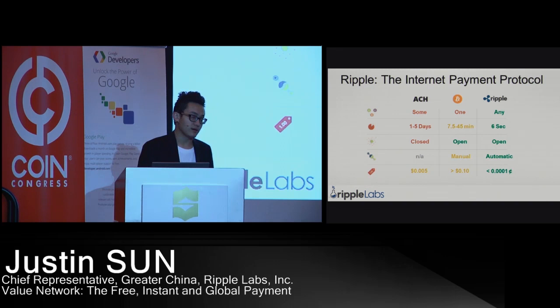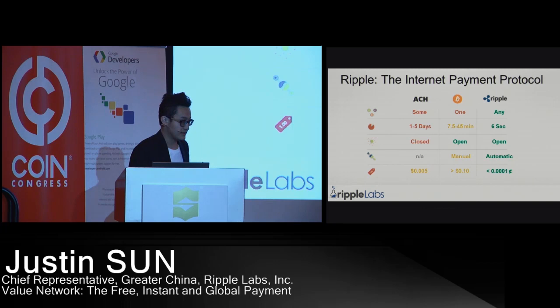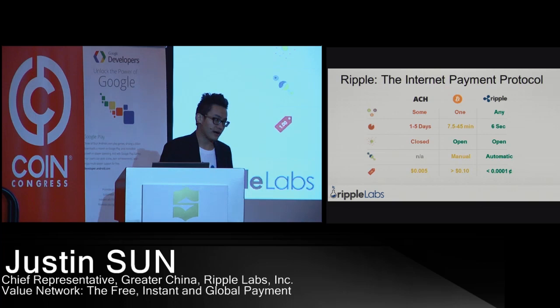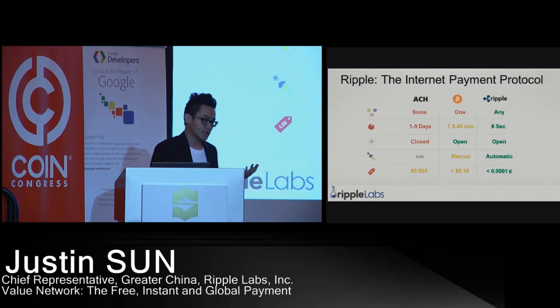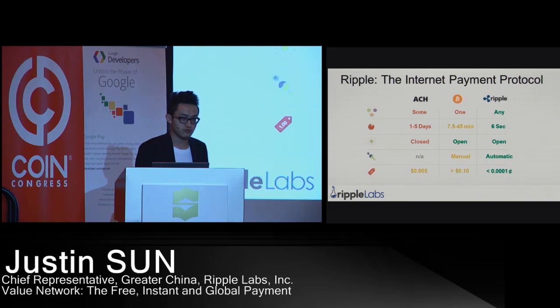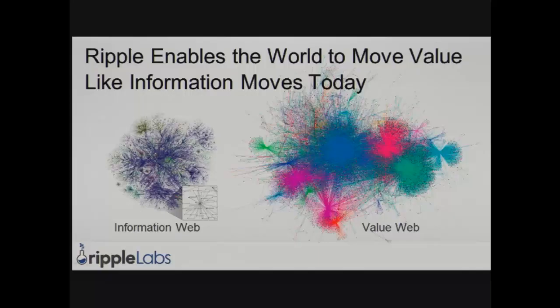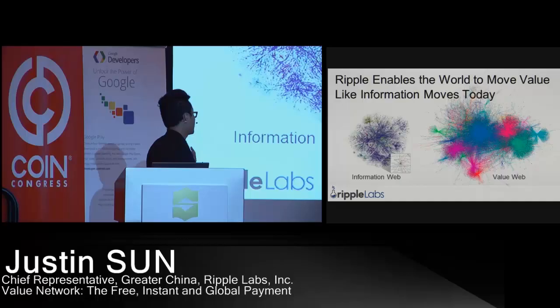Ripple is not about XRP — we don't ask people to accept XRP to become a Ripple user. We are a B2B company. When banks accept Ripple as infrastructure, like they do with Swift, the customer doesn't even need to know what Ripple is or how to use it — they can just enjoy the convenience that Ripple brings. The value network is just like the information network: it moves value freely and instantly.